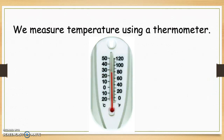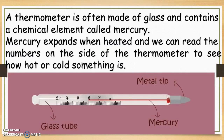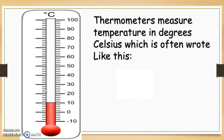We measure temperature using a thermometer. You can see the thermometer below here. A thermometer is often made of glass and contains a chemical element called mercury. Mercury expands when heated and we can read the numbers on the side of the thermometer to see how hot or cold something is. Thermometers measure temperature in degrees Celsius, which is often written like this.